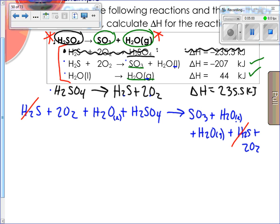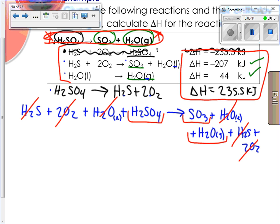We're left with H2SO4, SO3, and H2O gas. That is the reaction we're looking for. That's how you can check your work. Did I reverse everything that I needed to reverse? Did I multiply everything? Yes, I'm good to go. Now these enthalpies, I'm going to add them together. I've got negative 207 plus 44 plus positive 235.5, and the total enthalpy for this reaction is 72.5 kilojoules. And that's Hess's law.